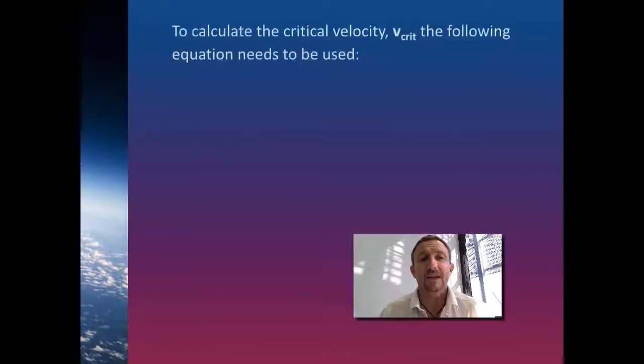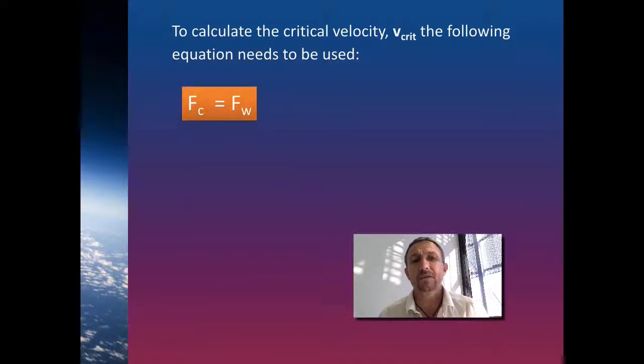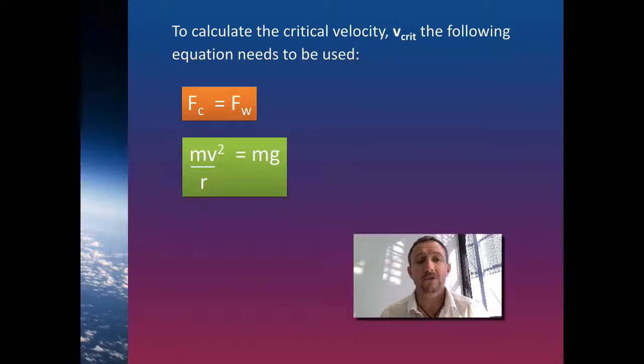So we've got the idea that we can require a specific velocity, this critical velocity, but how do we find it out? Well, we know that the centripetal force is going to be equal to the weight force. So our centripetal force is mv² over r and our weight force is mg.